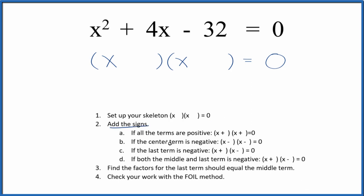After we've done that, we can add the signs into the skeleton equation. So when we look at the equation here, x squared plus 4x minus 32, we have a positive 4 and a negative 32. If that last term is negative, we're going to put a positive and a negative in our skeleton like this.